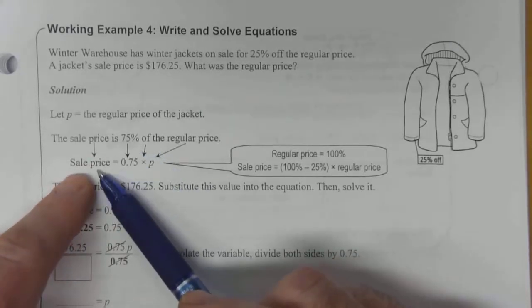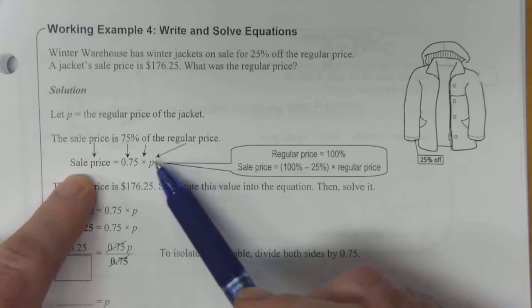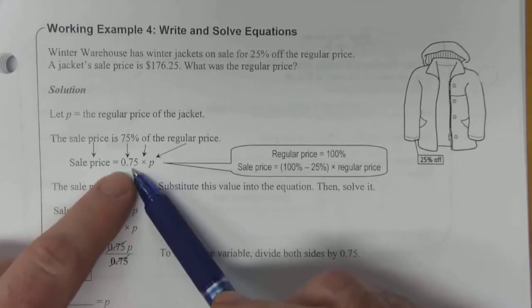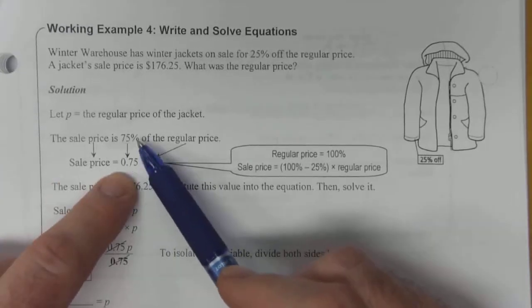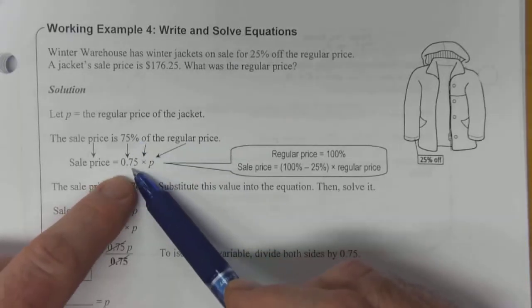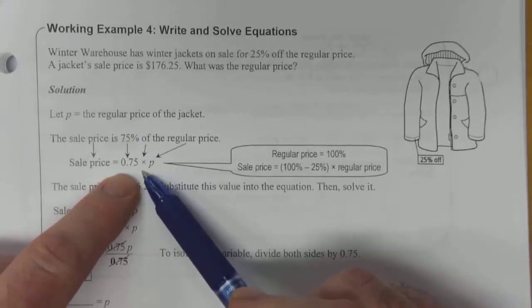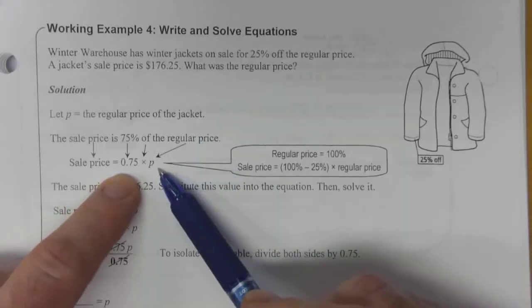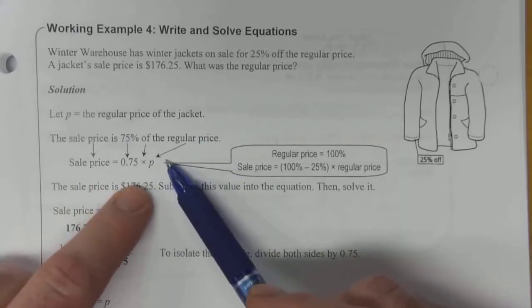So the sale price is equal to the original price times 0.75. 75% of the regular price is, well, 75% is 0.75. Of means times, and then regular price was P. So this is the equation we're working with here.